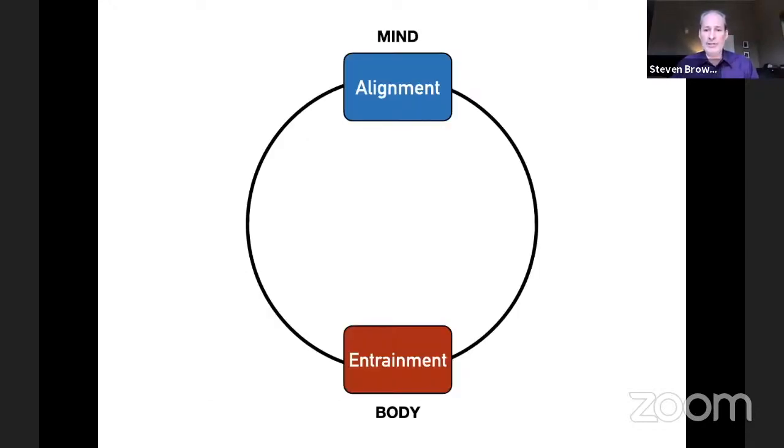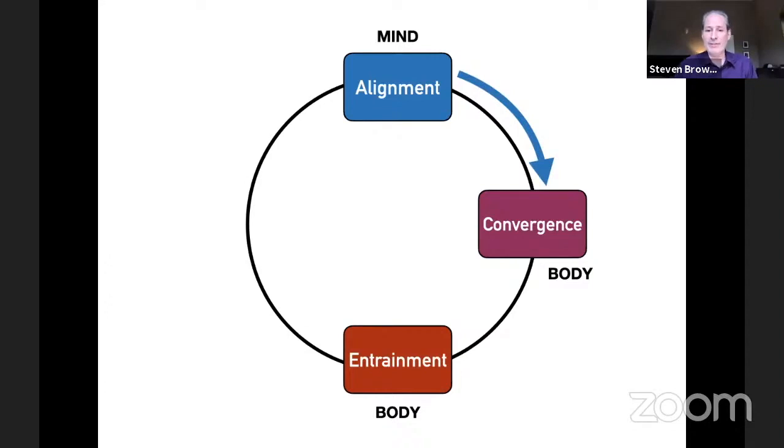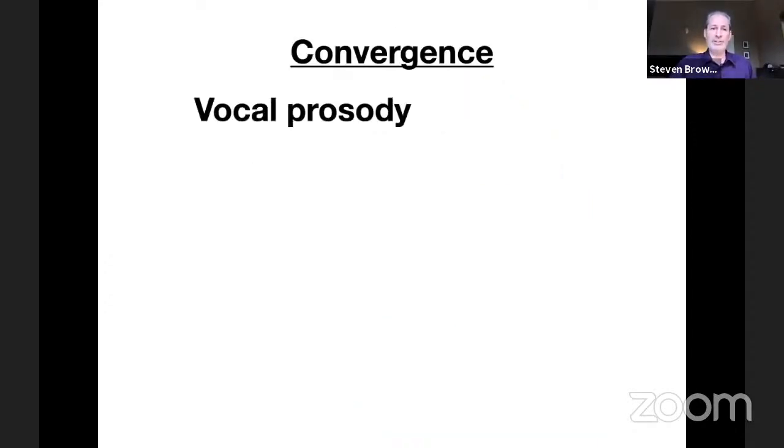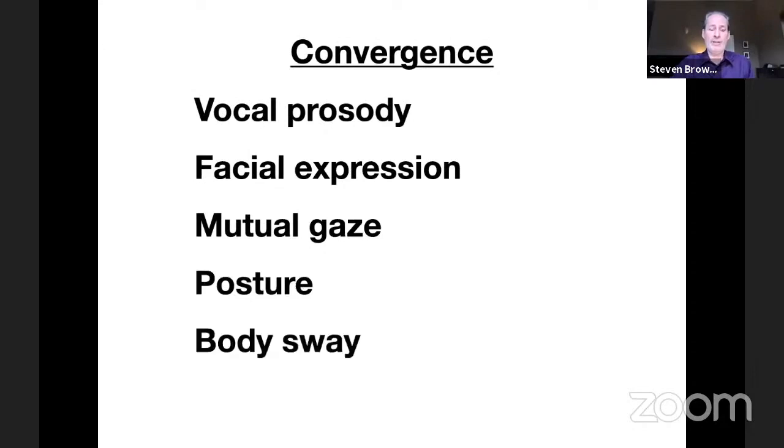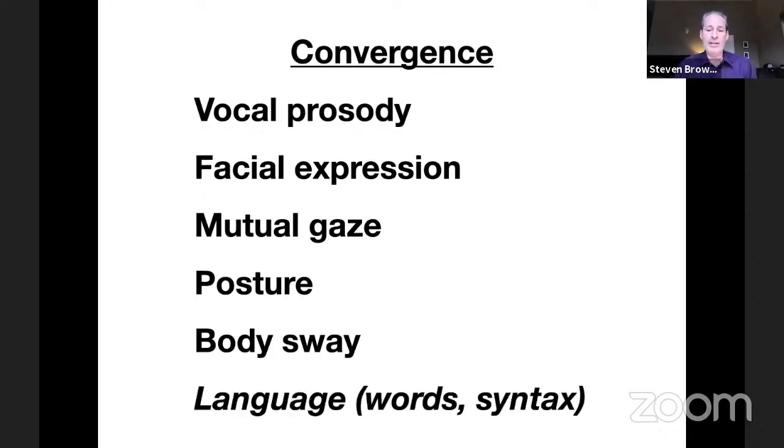One thing that will be discussed quite a bit at this conference is that when people are aligned—but not when they're disaligned—they show convergence of several features of their body. This convergence, if people are aligned at the cognitive level, carries over to their body interactions. This is shown at many levels: convergence of vocal prosody, facial expression, mutual gaze, posture, body sway—people sway together—and even cognitive things like lexical selections and syntactic constructions. When people are aligned at this more cognitive level, this seems to carry over to physical convergence of their voice, face, and body.